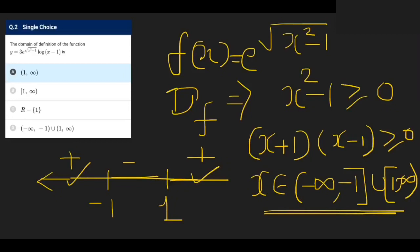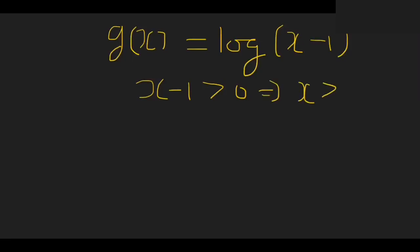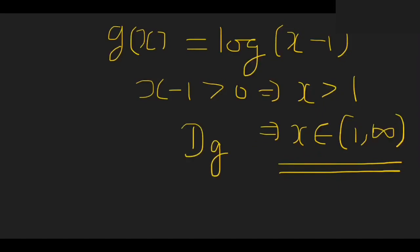Now let us consider the g(x) function. g(x) is log of (x - 1). For g(x) to be defined, x minus 1 should be greater than 0. This implies x is greater than 1, meaning x belongs to (1, infinity). So this is the domain of the second function, domain of g.